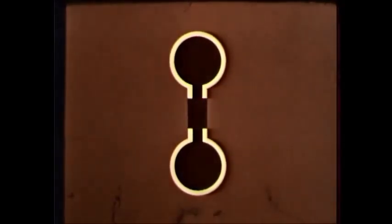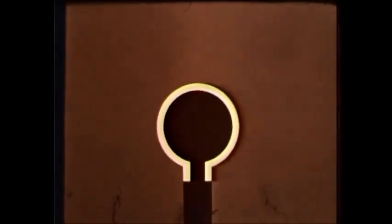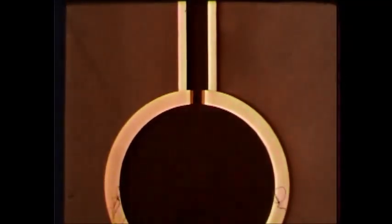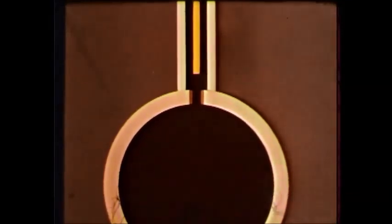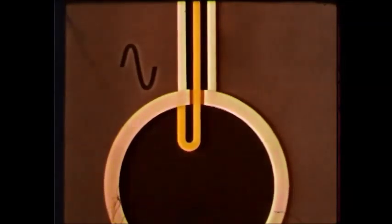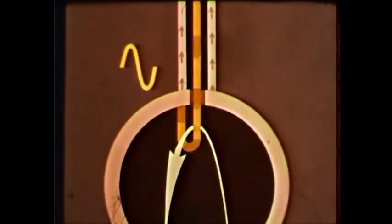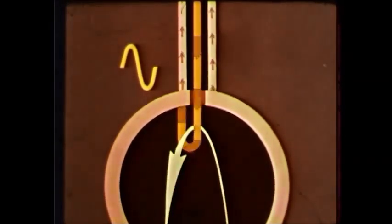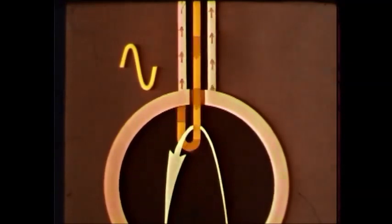The first resonator of the klystron is excited by the external signal which is to be amplified. This signal, often introduced via a coaxial cable, must have a frequency at which the cavity can resonate. The current in the coaxial cable sets up a magnetic field, which in turn brings the resonator into operation.